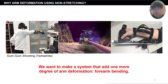Forearm bending generates an equivalent of a new joint along the forearm. It modifies the direction of the forearm and highly extends the locations that can be reached by the forearm using smaller physical motion. Therefore, based on prior work, we want to add one more degree of undeformation for arm bending.